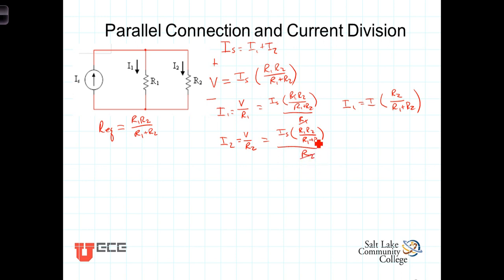This time the R2's cancel and we're left with I2 equals I sub S times R1 over R1 plus R2.